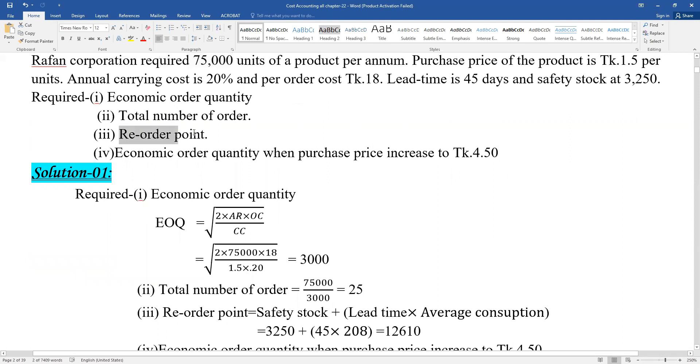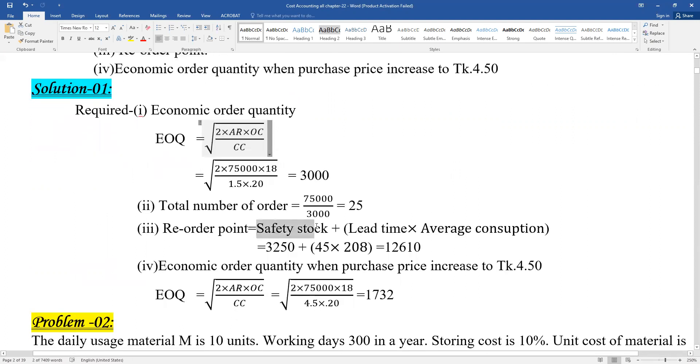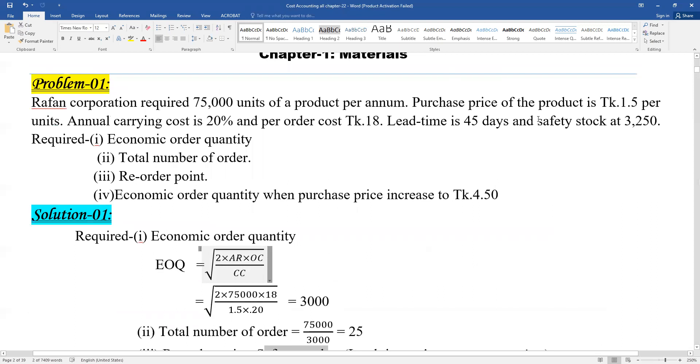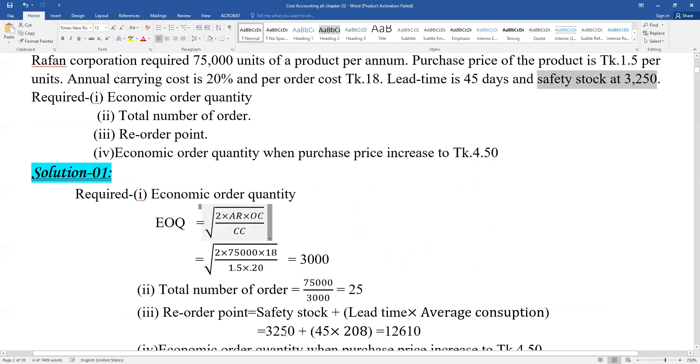Reorder point: The reorder point formula is safety stock plus lead time times average consumption. Safety stock is given in the problem.